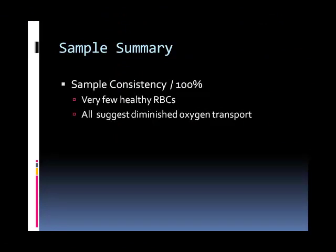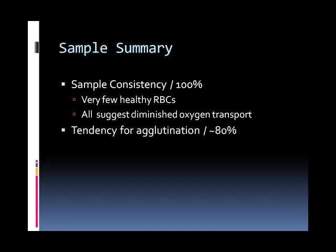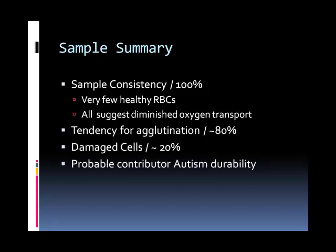All of the samples that we've processed are consistent. We seldom see healthy red blood cells, and each sample suggests significant limitations in oxygen delivery. The tendency for highly agglutinated samples is approximately 80%. It's very likely that these individuals experience continuous ischemia resulting in ongoing cellular damage that further limits their ability to heal. The percentage of samples that show high levels of damaged cells is approximately 20%. Collectively, these phenomena are likely contributors to the durability of autism.